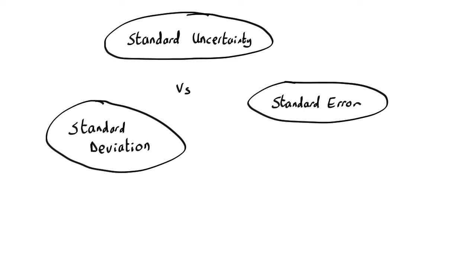One very confusing thing about statistics and uncertainties is the difference between different things called standard. There are basically too many things with standard in the name. We have standard uncertainties, standard errors, and standard deviation. What's the difference between all these things? Why do they have such stupid names? Well, that's what this video is all about.